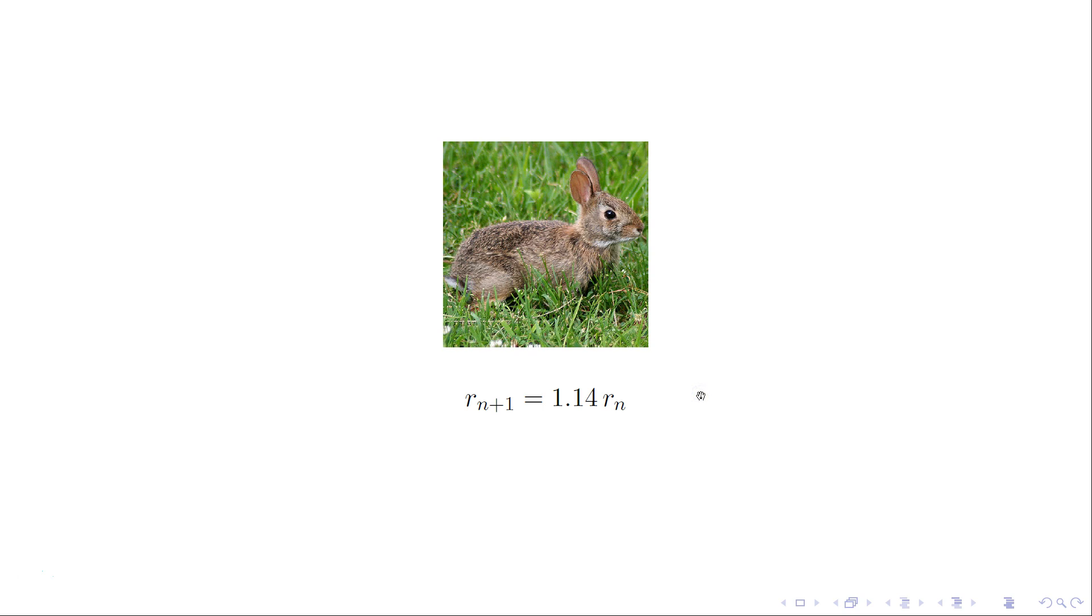Well, the rabbit population might look something like this: the next year's population might be just a percentage increase based on the current year's population. That accounts for both the death and reproduction of the rabbits. But altogether, there's a 14% net increase in the rabbit population year to year. And that would be exponential growth.